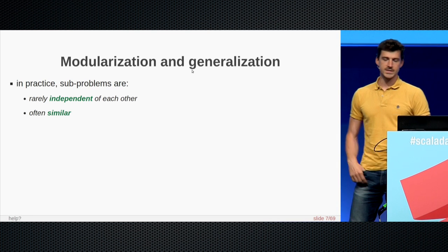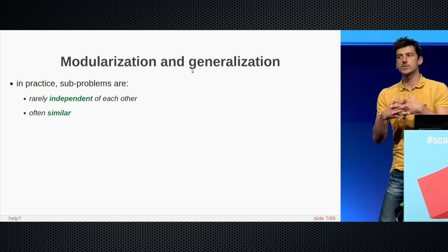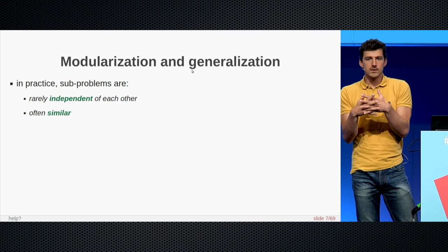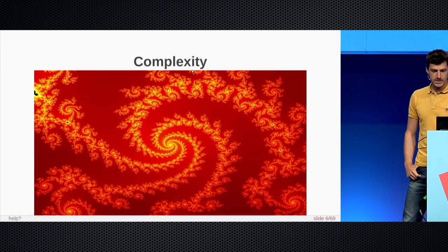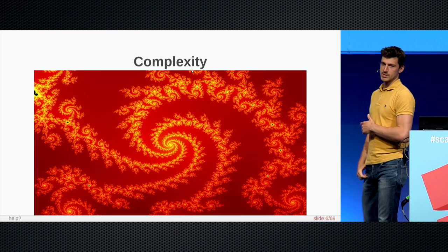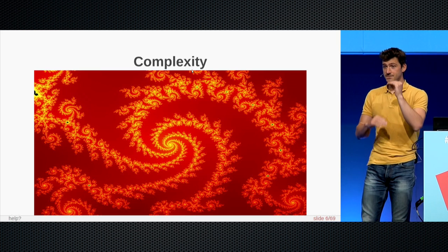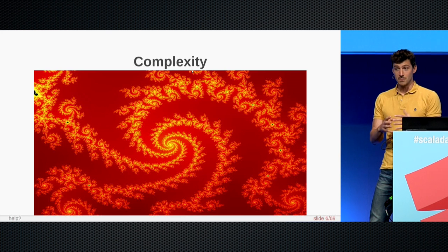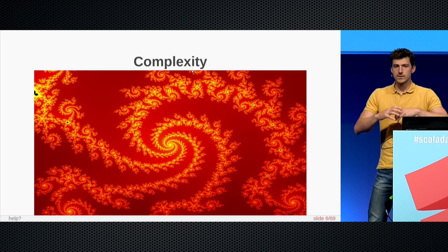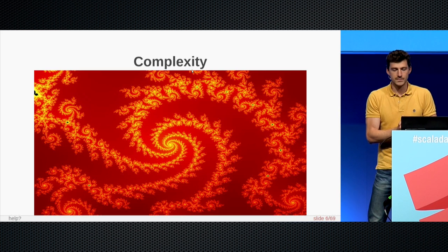However, in practice, these sub-problems are not independent of each other. And also in practice, we can observe a lot of similarities between different parts of programs. For instance, if I go back to this picture which has been generated by a program, the actual code that generates this picture is very small because it relies on means of abstraction to describe some general pattern that can be specialized in different ways.